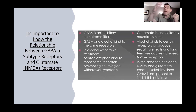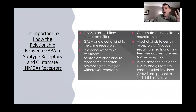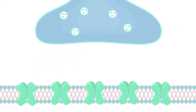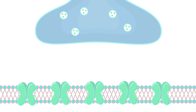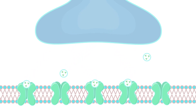On the NMDA side, it's important to note that glutamate is an excitatory neurotransmitter and it normally binds to NMDA. Alcohol binds to certain receptors to produce sedating effects, and long-term use causes an increase in NMDA receptors because the body wants to adapt. But then you have a problem: if you have a huge increase in NMDA receptors from chronic alcoholism and you stop drinking, glutamate can uninhibited interact with those receptors — and that's when you get a hyperexcited state. That's when you are at most risk of delirium, hallucinations, and seizures.